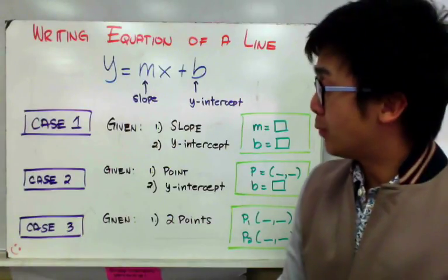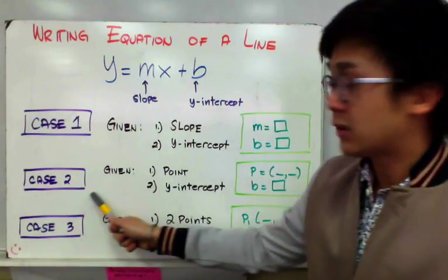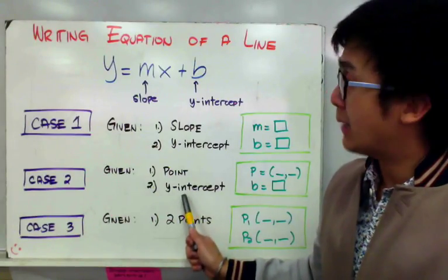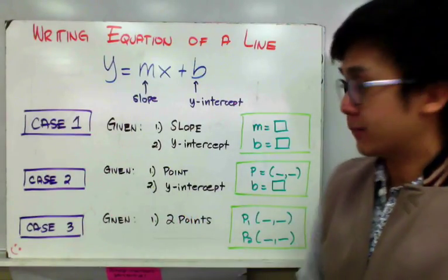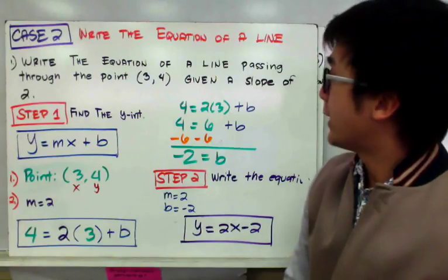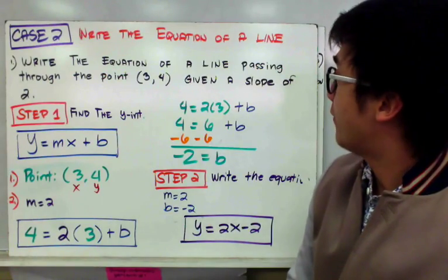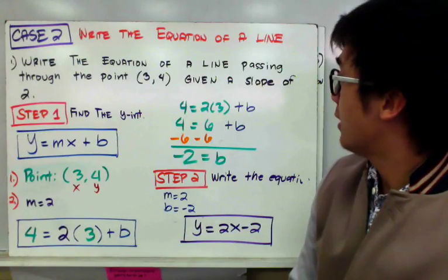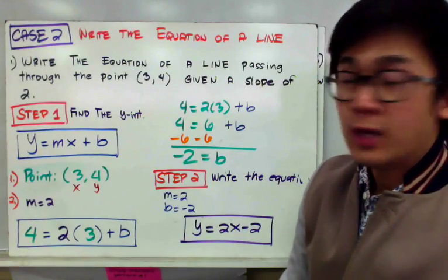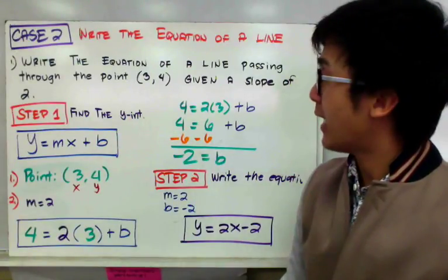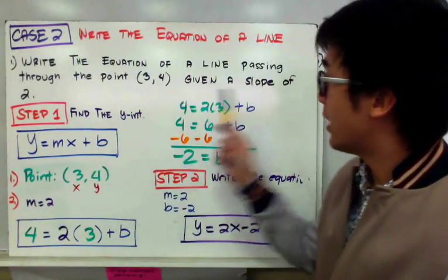For our first example, we are going to focus on case number two — answering problems given a point and y-intercept to write the equation of a line. In this example, we need to write the equation of a line given that the line passes through the point (3, 4) and has a slope of two. So in this example, our two givens are the point and the slope.